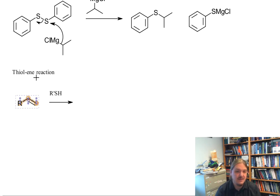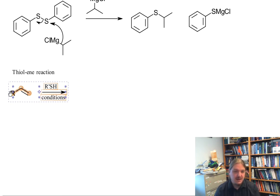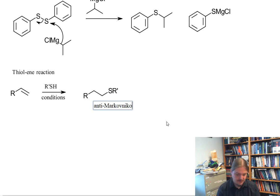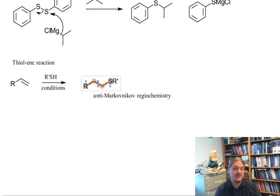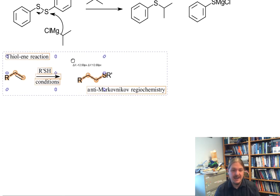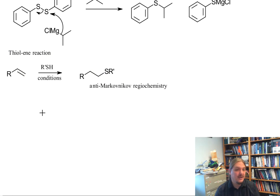I'm going to use R prime because I want a different alkyl group on the thiol. I'm just going to write conditions here because there are two different ways that this can work depending on what the group on the alkene is. But in all variations of this reaction, it's an addition reaction across the alkene. And it features anti-Markovnikov addition. And if you've watched any of my previous videos, by the time we get to anti-Markovnikov regiochemistry, that means that whatever these conditions are, we're not looking at a reaction that has a carbocation intermediate. So there's two ways that this can be done.